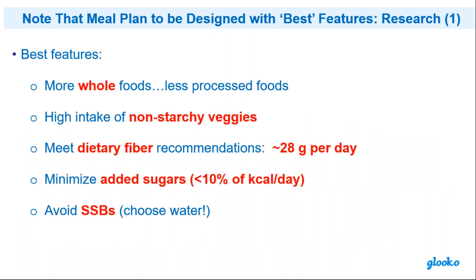Our meal plan must be designed with the best features — more whole foods; whole grain breads; a high intake of non-starchy vegetables, especially eating those before the carbohydrates at the meal like a big salad; meeting dietary fiber recommendations of 28 grams a day total, with 7 to 13 grams soluble fiber. Minimize added sugars — but if we have sugar, it's okay as long as it's part of your carbohydrate budget. If you're having 45 grams at the meal and you want a mini cupcake at 20 grams, that's okay — it's 20 grams out of your 45-gram budget.